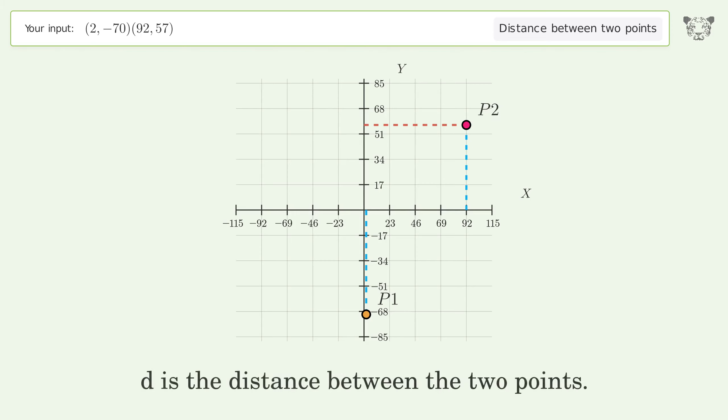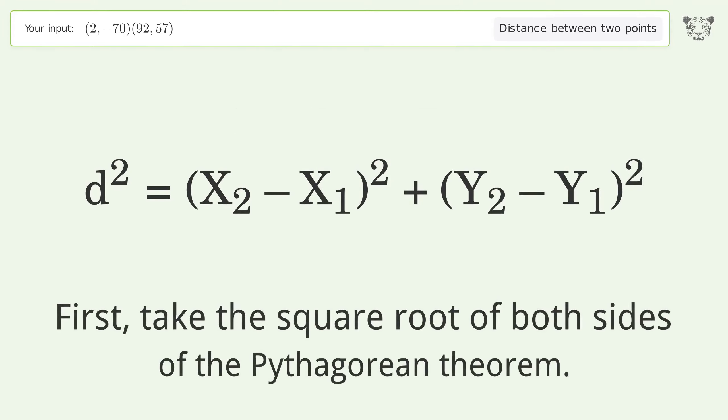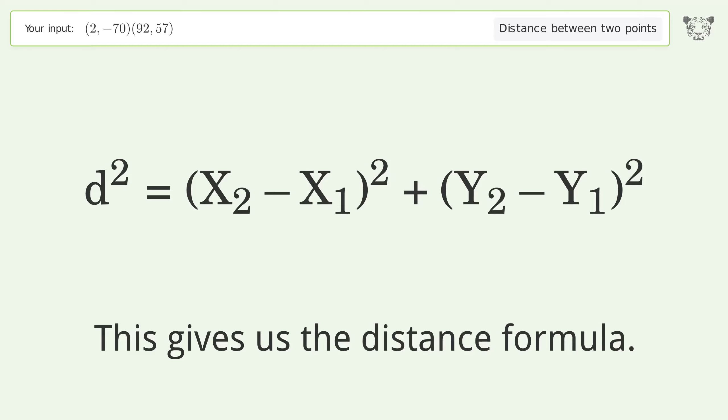d is the distance between the two points. First, take the square root of both sides of the Pythagorean theorem. This gives us the distance formula.